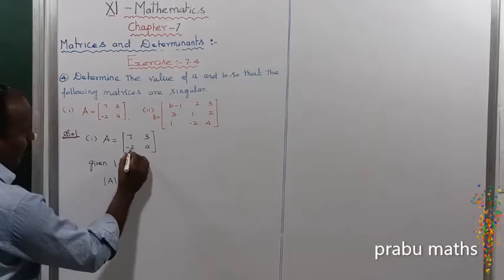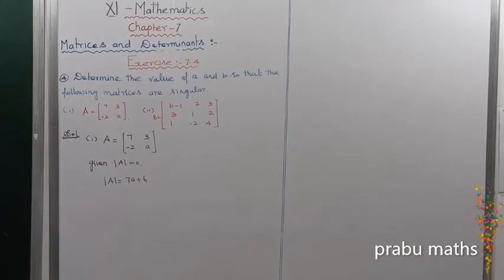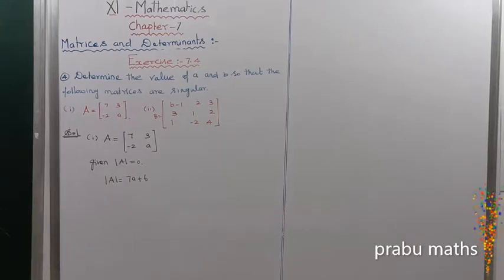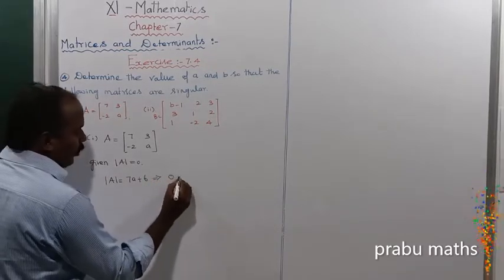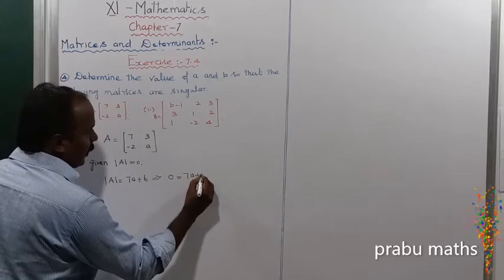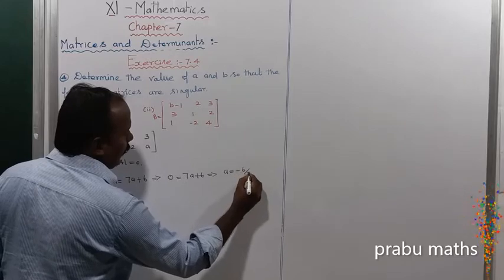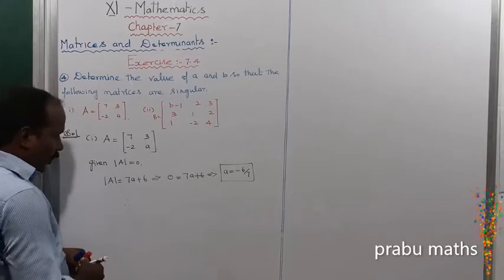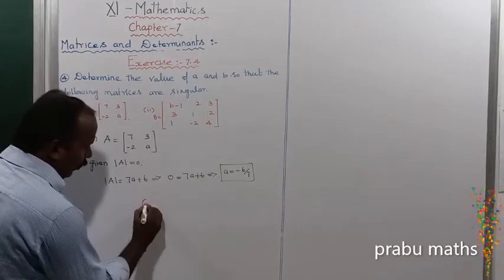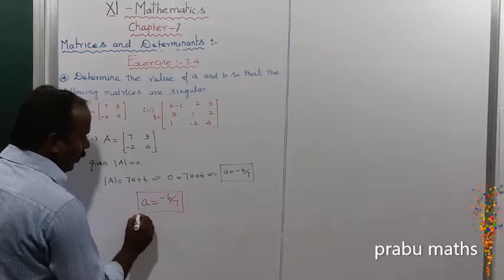7A minus, so minus into minus plus 6. That is the value of det(A). Therefore, given det(A) is equal to 0, which implies 0 equals 7A plus 6, which implies A equals minus 6 divided by 7. Therefore the value of A is equal to minus 6 divided by 7. The first subdivision is completed.